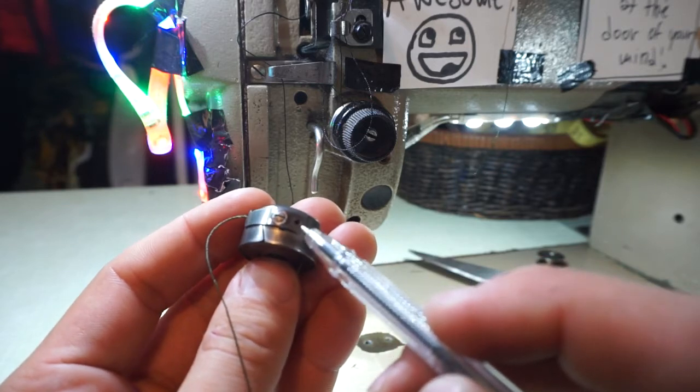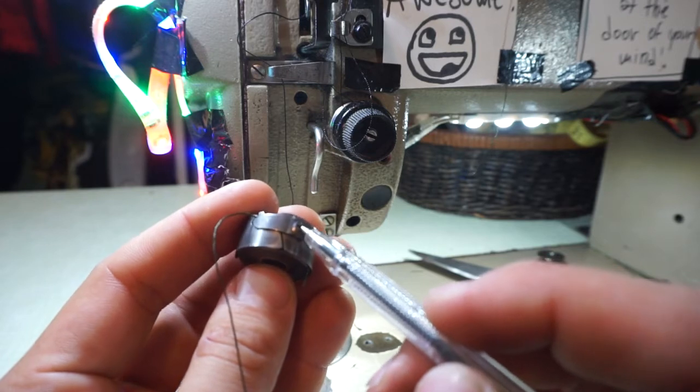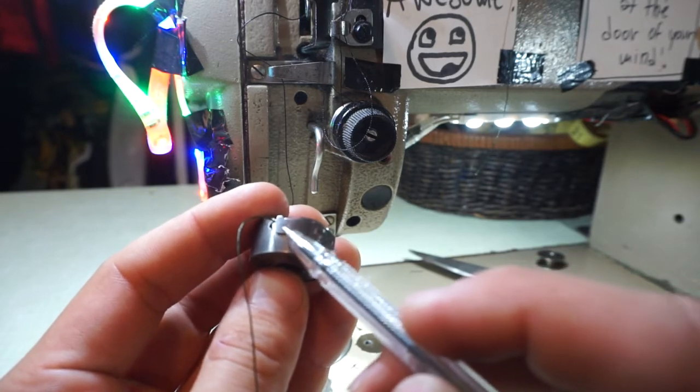You have a screw here and another screw here. So by twisting this screw here you determine the lower thread tension.